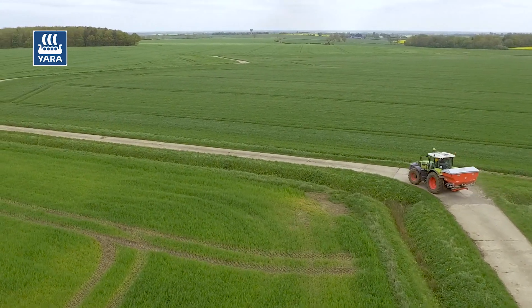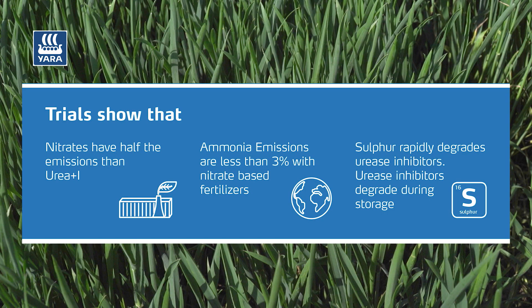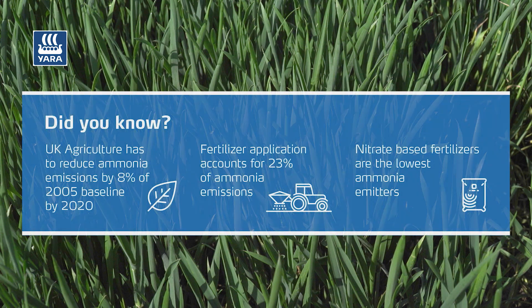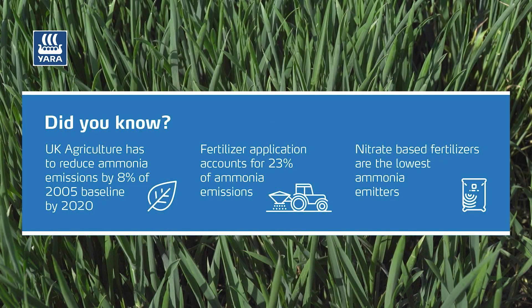As mentioned earlier, emissions is high on the priority list — it has become quite a hot topic with agriculture being one of the main focuses for government. At Yara we're very aware of these issues and know that it needs to be part of future nitrogen management decisions. Government research has consistently shown that ammonium nitrate based products have the lowest ammonia emissions out of all the nitrogen products.